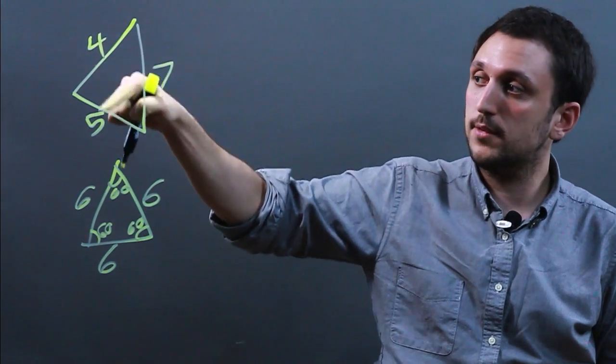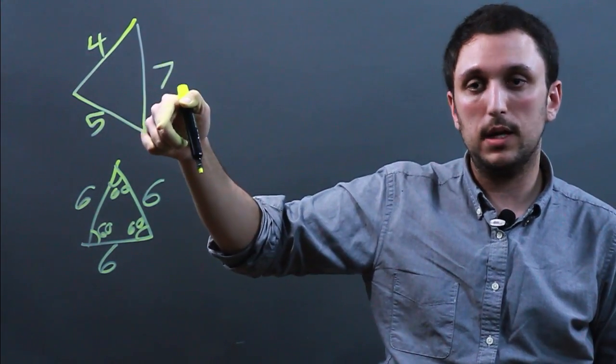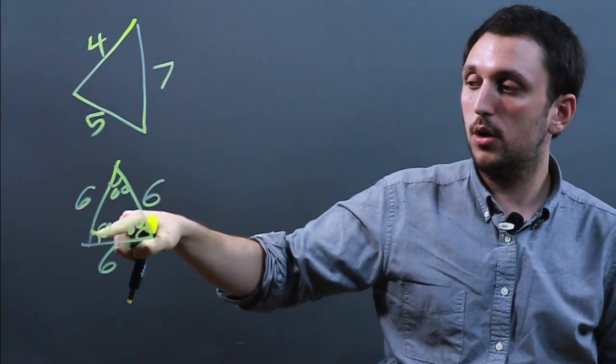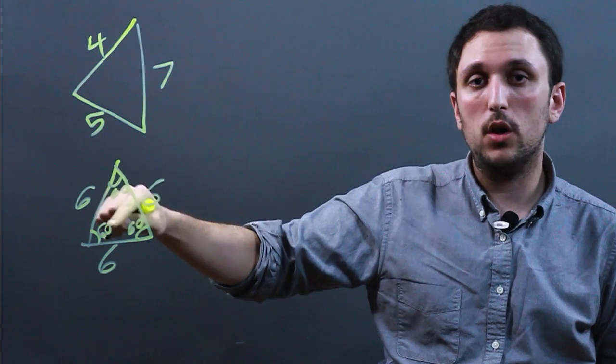So with a scalene, no sides can be equal, and no angles can be equal. With an equilateral, all sides are equal, and all angles are equal.